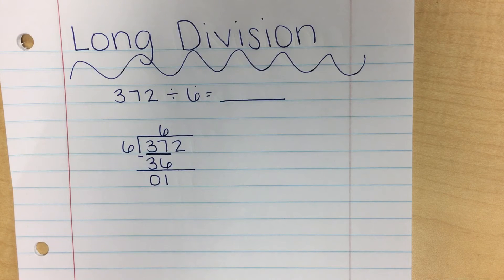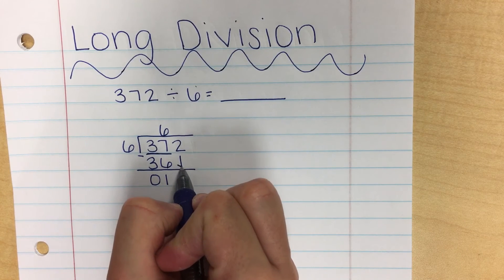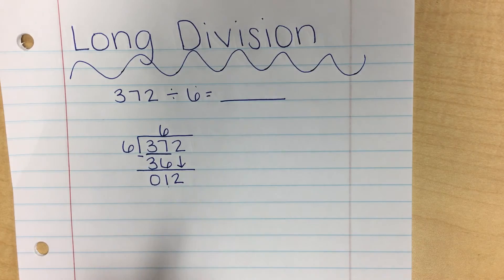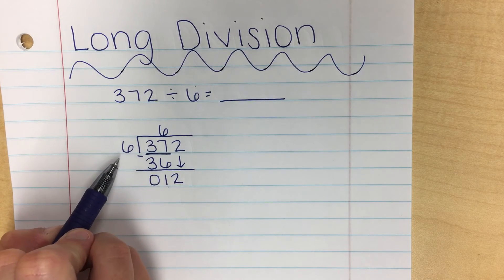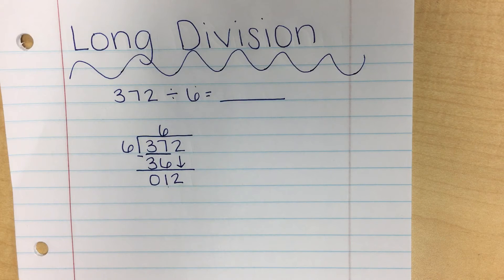My next step is to bring down the remainder of my dividend. The only number that's left is 2. So I'm going to bring that down beside my 1. And now I need to figure out how many times my divisor of 6 will go into 12. So how many times will 6 go into 12?